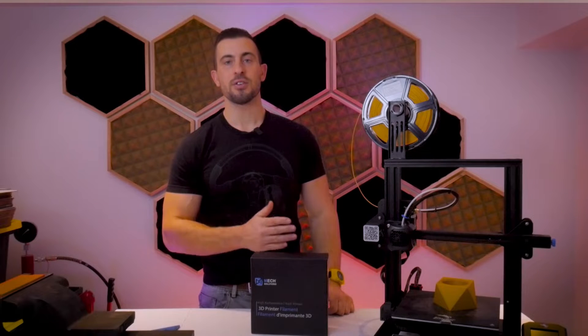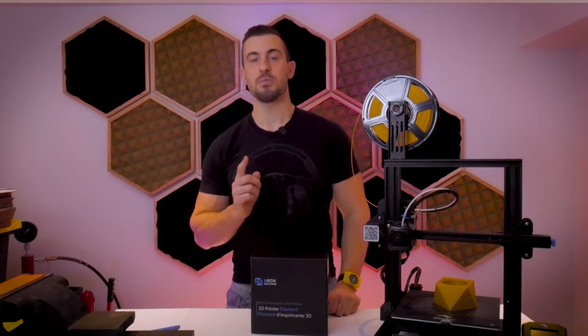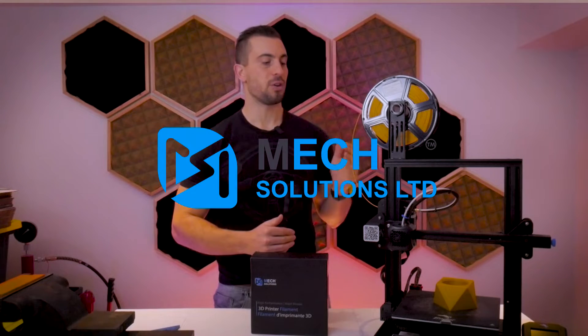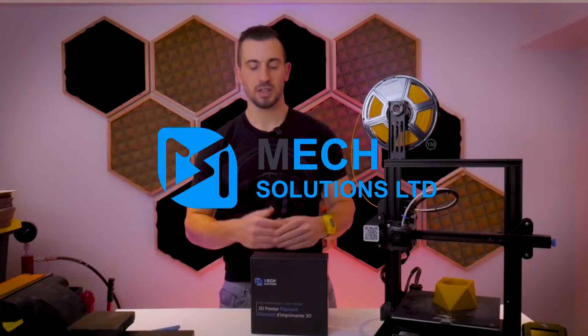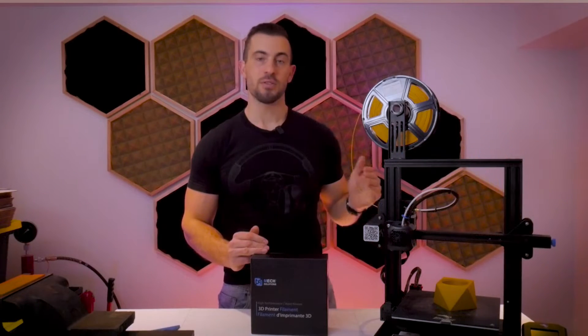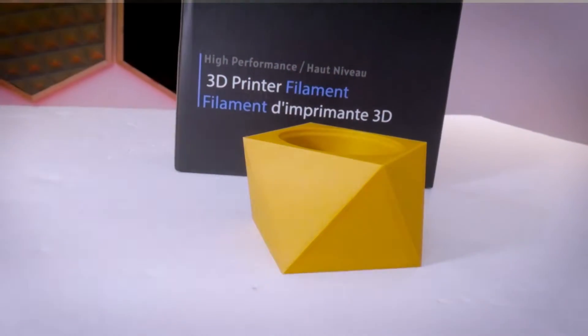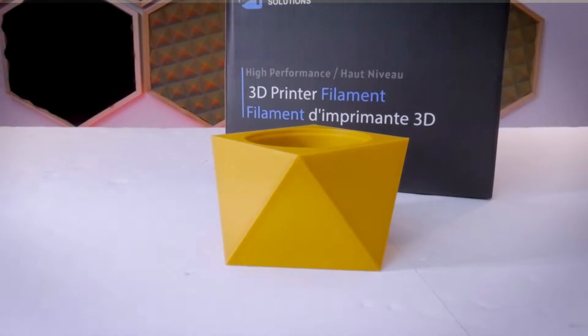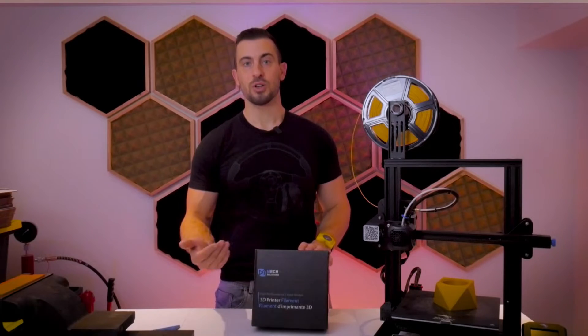I recently picked up this Creality Ender 3 V2 from Mech Solutions at mechestore.com. I'd highly encourage you to check them out - they're passionate about 3D printing and have a nice line of filament. I'm using their PLA Plus here and it prints very smooth. They also have a great rewards program where you can exchange points for discounts on future purchases, which is awesome when you're going through a lot of consumables like filament.